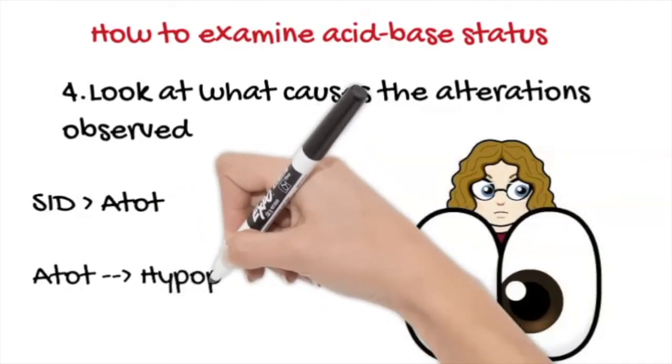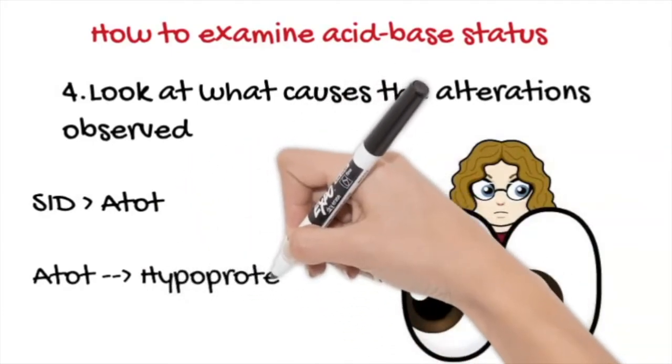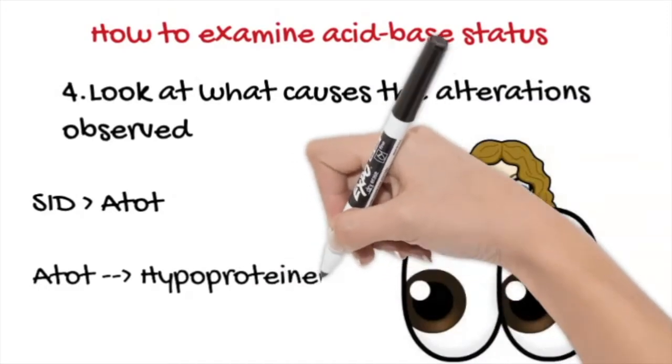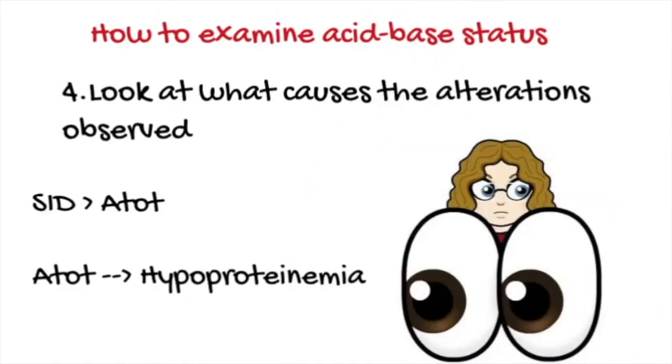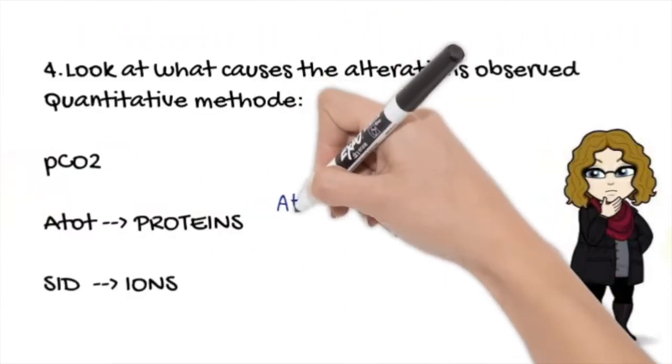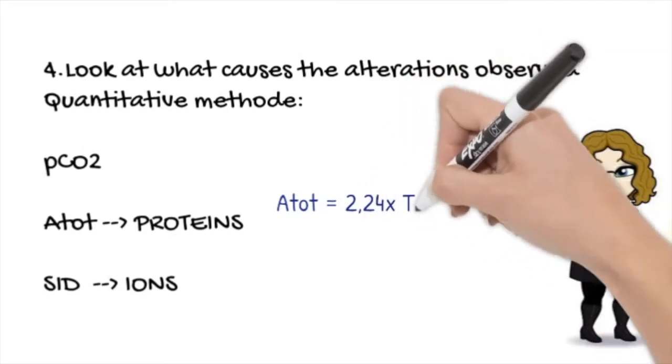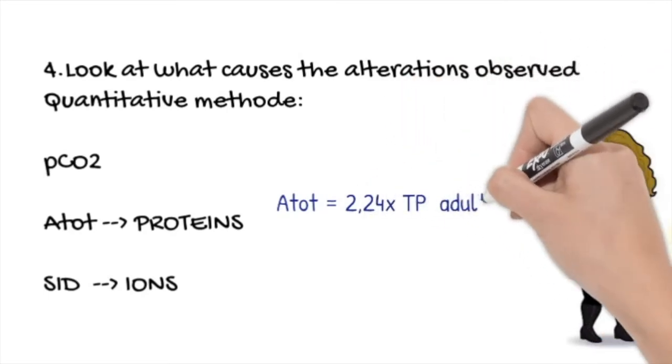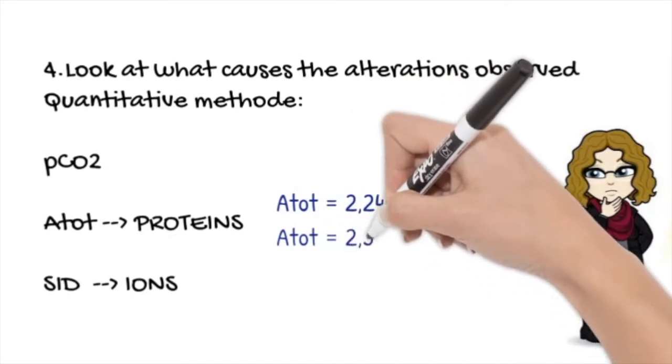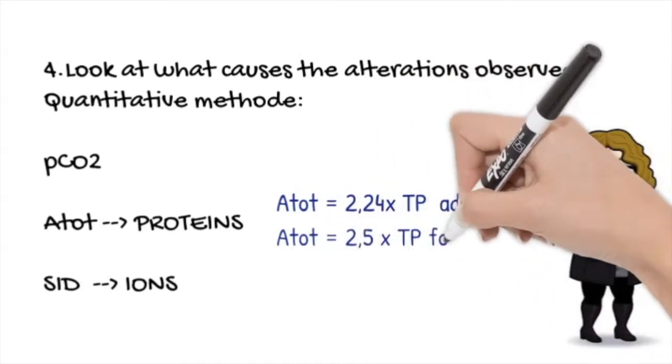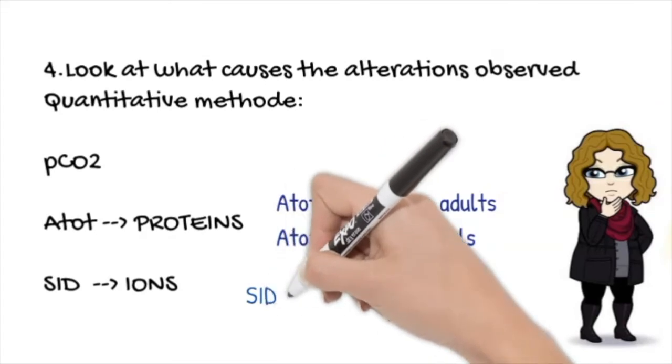The main alteration will be caused by changes in strong ion difference and not in the A-tot, because A-tot have very little influence on the pH and only few cases in which there are huge hyperproteinemia will have a significant influence on pH. So we recommend not calculate it except in cases where there are alterations in proteins. If you have to calculate it, the simplified equation is the product of total protein and 2.24 for adults or 2.5 for foals.